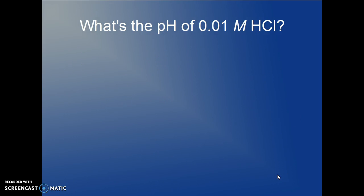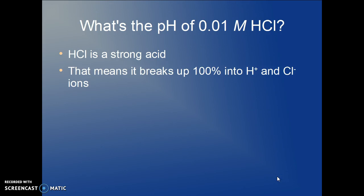What's the pH of 0.01 molar hydrochloric acid? Same strong acid. Breaks up a hundred percent. Hydrogen ion concentration is the same as the initial hydrochloric, 1 × 10⁻².